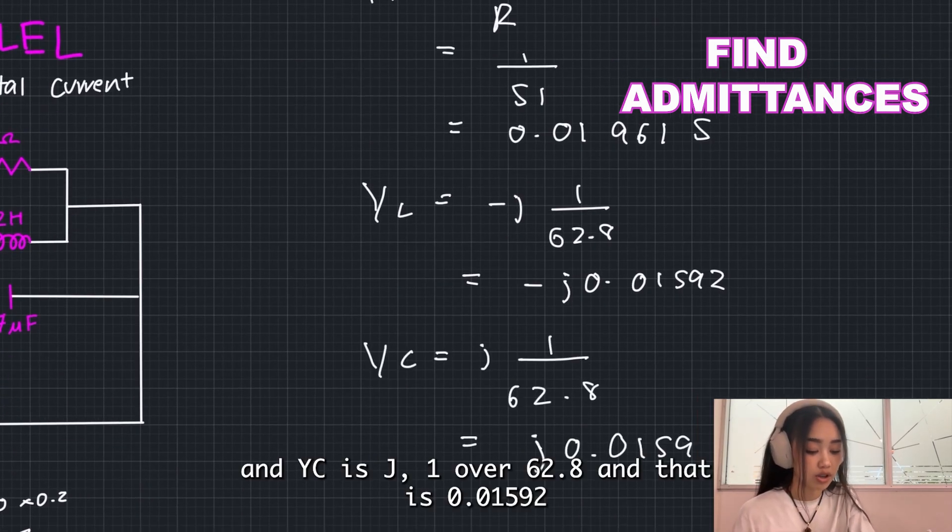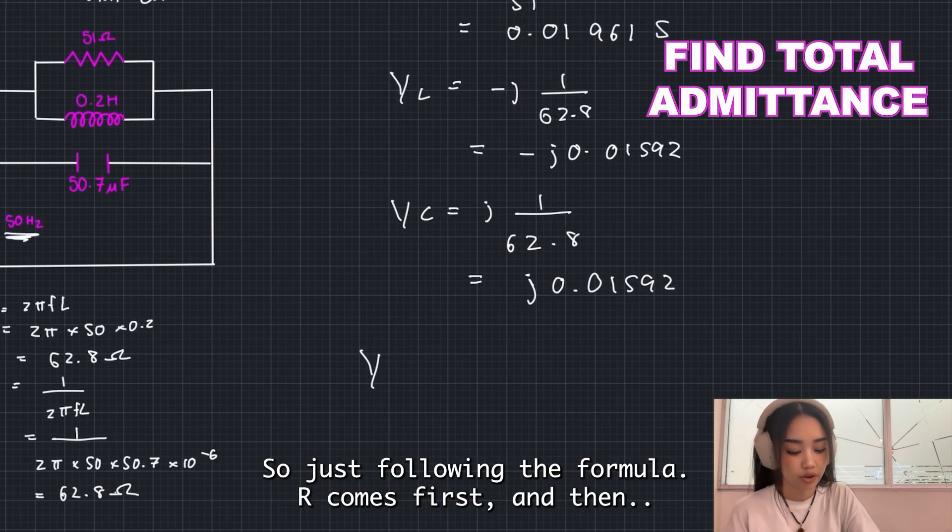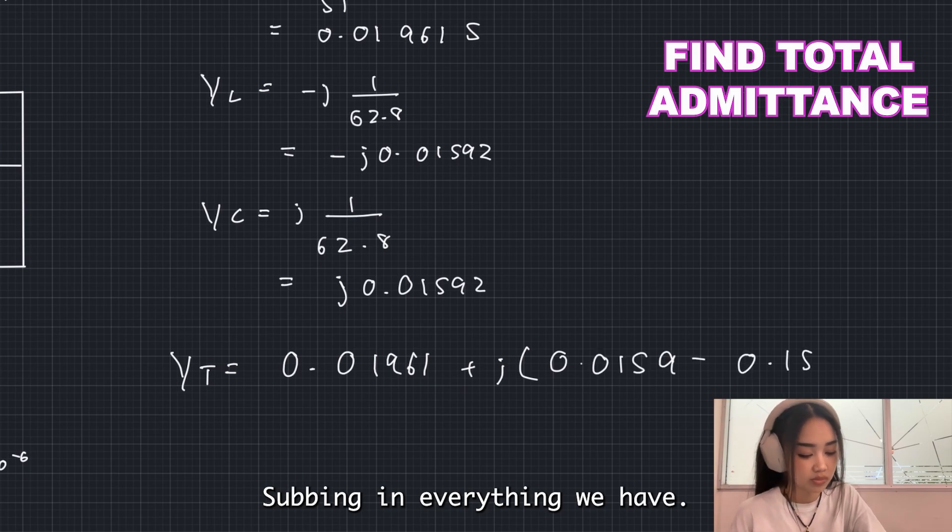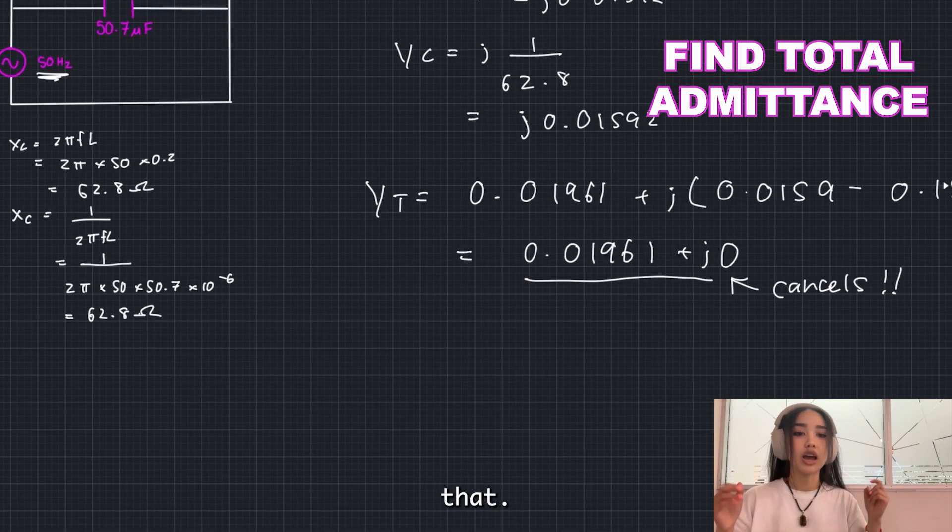Which is 0.0592 as well. Adding all the admittance together, just following the formula, and that gives us that.